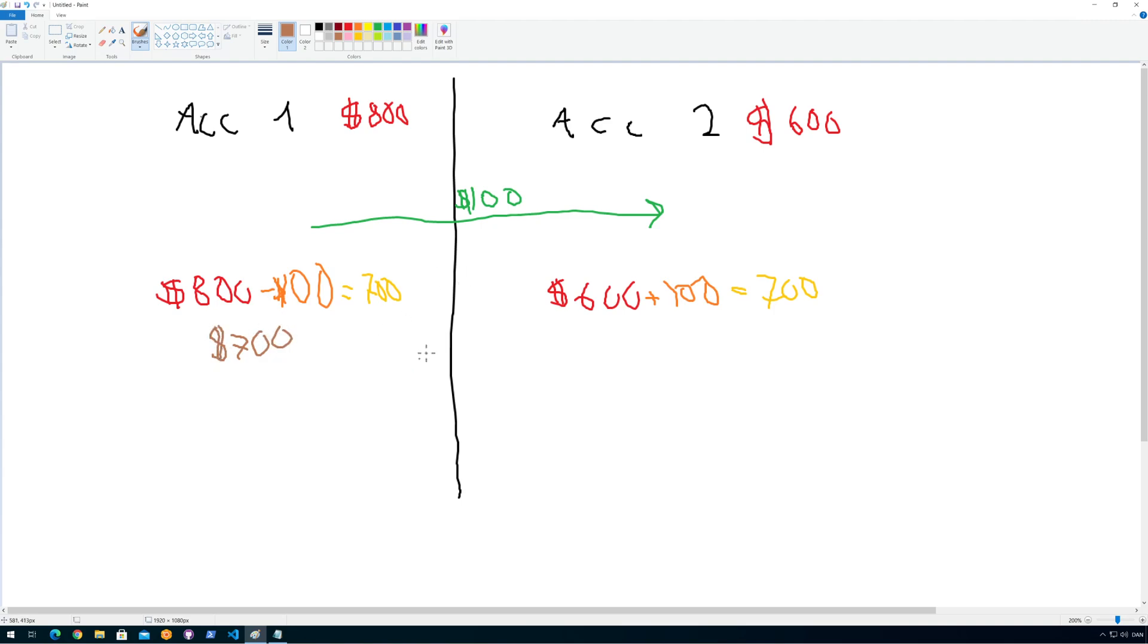If our database then for some reason crashes at this point, we would still have $600 over here and we would only have $700 over here. So the problem is we kind of took the money from our customer but we didn't put them on his other account. So this is pretty bad because now the customer lost $100 because of our badly designed system.